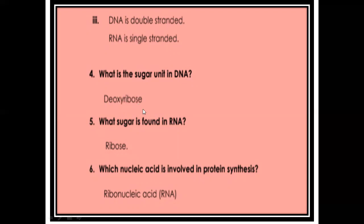Question number four: what is the sugar unit in DNA? The answer is deoxyribose. In RNA it is ribose — D means deoxyribose and R means ribose sugar. Question number six: which nucleic acid is involved in protein synthesis? Ribonucleic acid, RNA, is involved in protein synthesis.